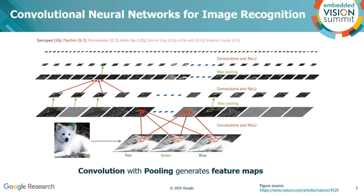Given input images with RGB three channels, ConvNets perform convolutions with non-linear activations using small learnable kernels like a sliding window, and then generate feature maps. The feature maps are then max-pooled to generate another level of feature maps with reduced size. As the feature maps are reduced, the receptive field of the small kernels is increased, so a small kernel can gather a wider range of pixels to learn correlations.